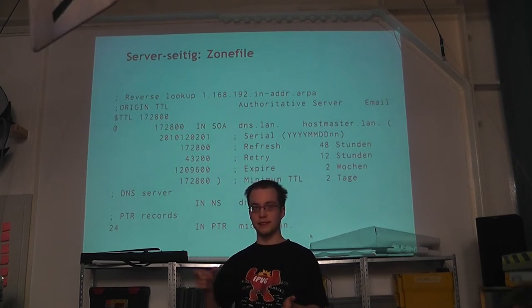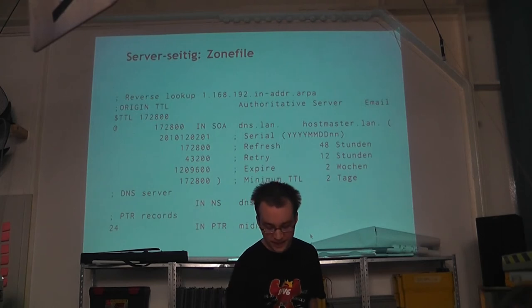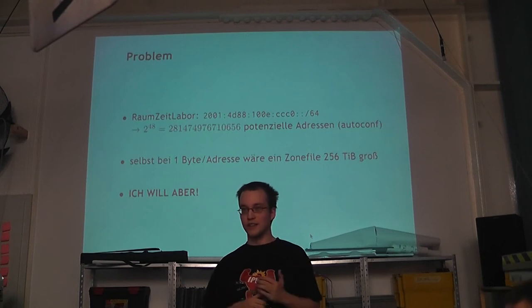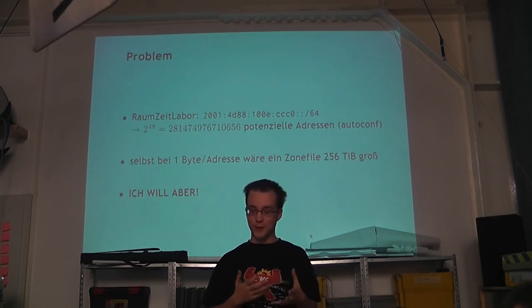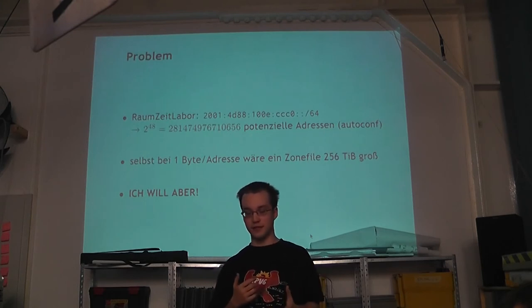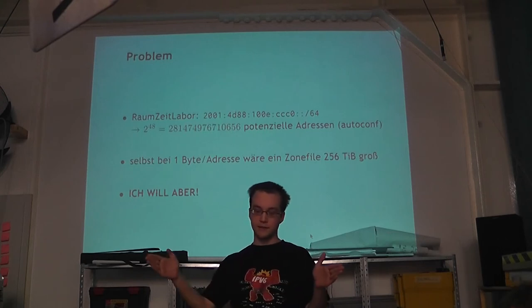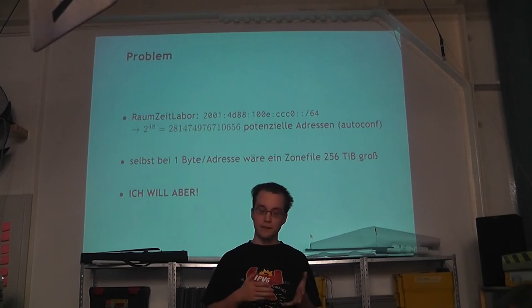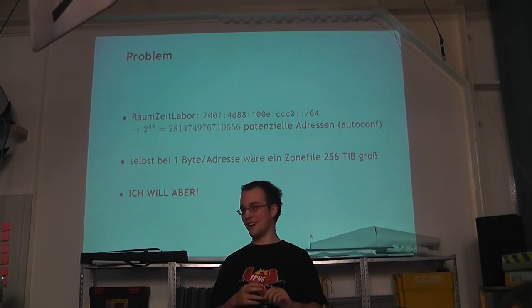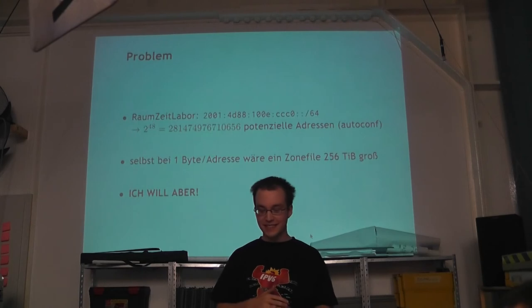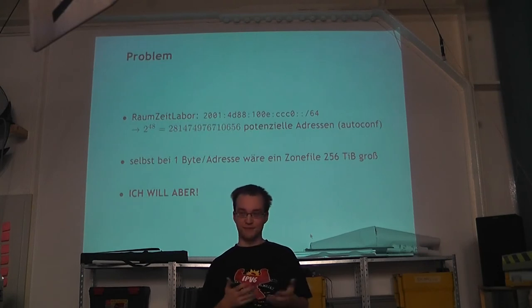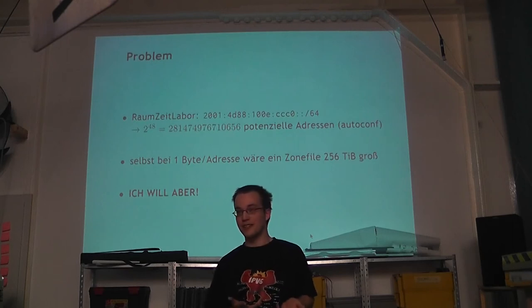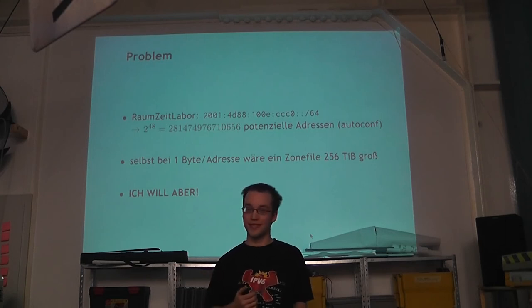Now we have a small problem. In the Raumzeitlabor, and everywhere else where IPv6 is used, you actually want to use autoconfiguration — the mechanism, as you may remember from my previous talk, by which a computer joining the network can automatically get an IP address. Because of how this works, there are theoretically 2^64 IPv6 addresses in a /64 subnet — the first 64 bits are fixed, the others are variable. However, because of how autoconfiguration works, you lose a few bits since the IPv6 address is generated from the MAC address, giving you only 2^48. And the problem is that even if you only had to configure one single byte per address in the zone file, the zone file would be 256 TB in size — clearly more than you can fit on a current server hard drive, and much more than you can load into RAM. And that is what matters, because Bind wants to load the zone file into memory before serving it.